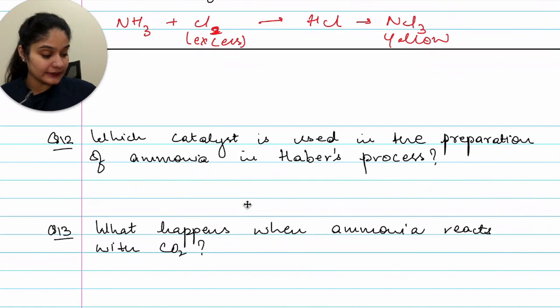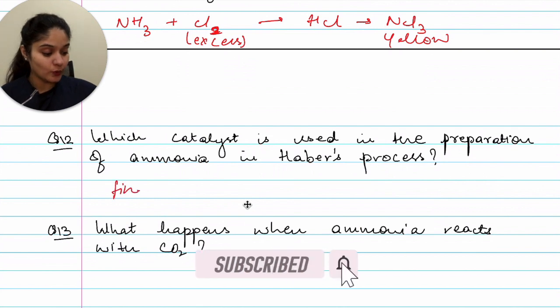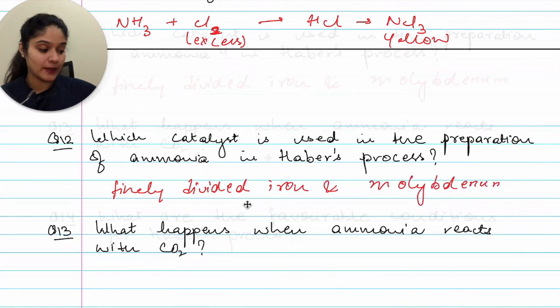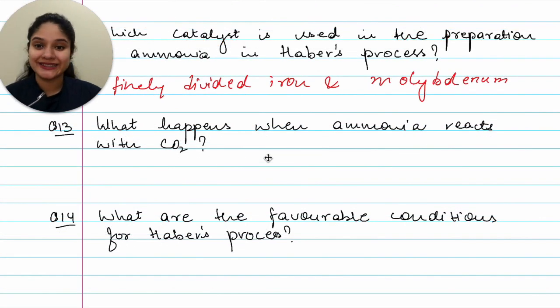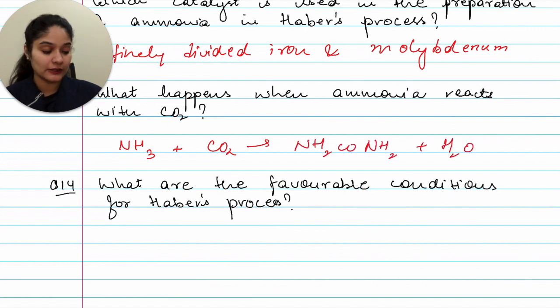Which catalyst is used in the preparation of ammonia in Haber's process? So you will use finely divided iron and molybdenum. Now question thirteenth, what happens when ammonia reacts with carbon dioxide? So that would be ammonia plus CO2 would give you NH2CONH2 plus water. Make sure that you balance the equations.